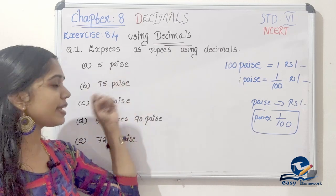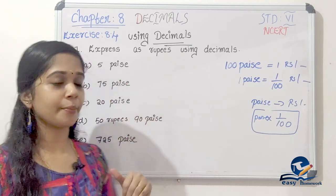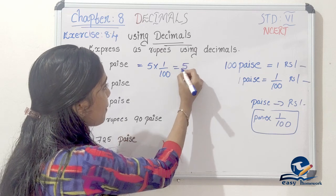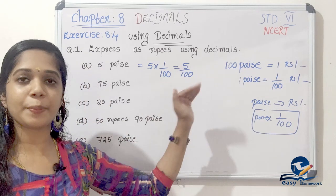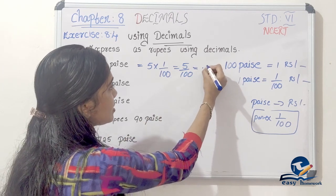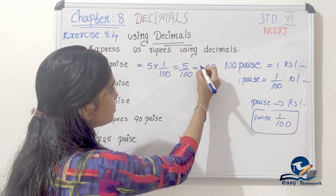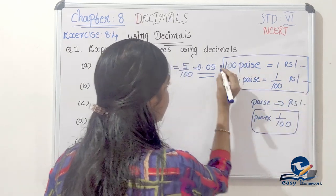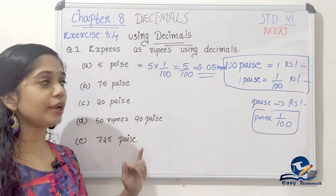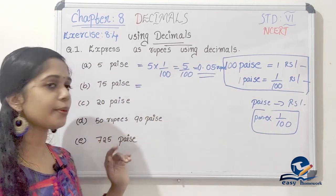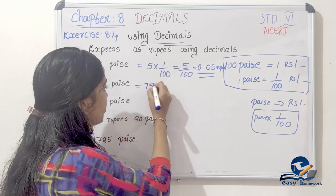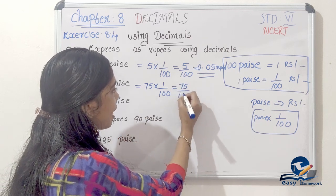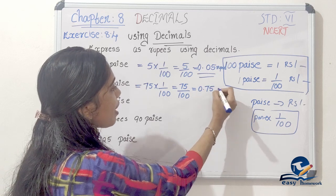The first question: 5 paise. We do 5 into 1 by 100, which is 5 by 100. That equals 0.05 rupees. Next, 75 paise: 75 into 1 by 100, which is 75 by 100, equal to 0.75 rupees.